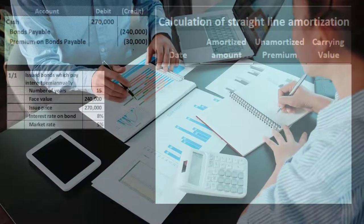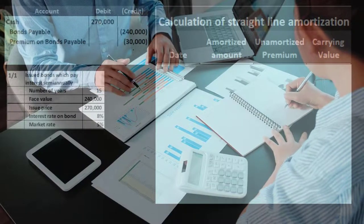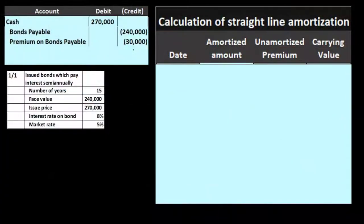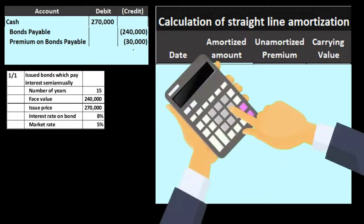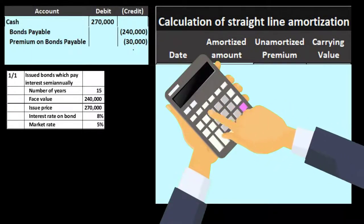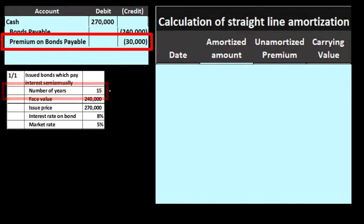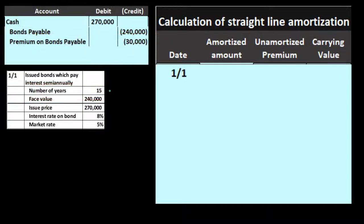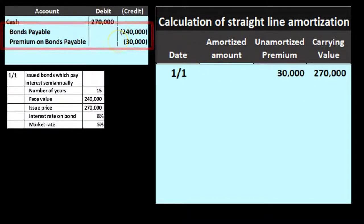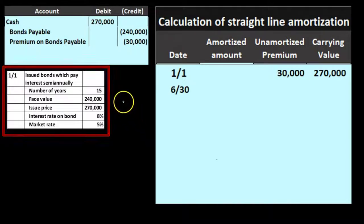Just like depreciation on equipment — where we take the cost divided by the number of periods and allocate it over the useful life — we'll do the same with this premium. We'll take the $30,000 premium and allocate it over 15 years with semi-annual payments. On January 1st we start with a premium of $30,000, giving a carrying value of $270,000 (the $240,000 bonds payable plus the $30,000 premium).